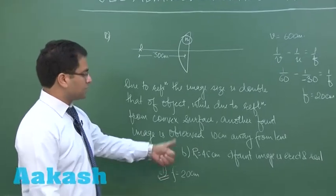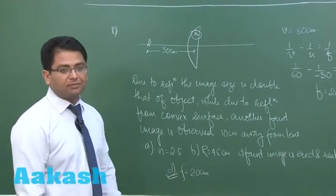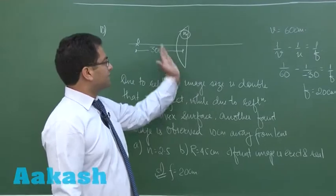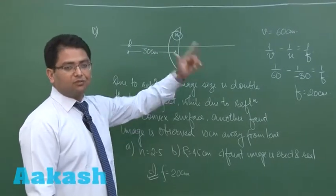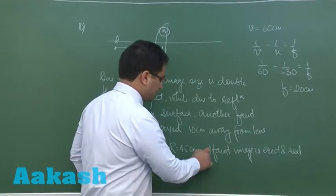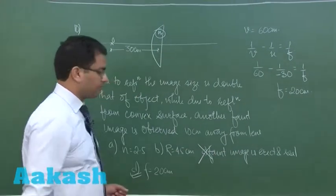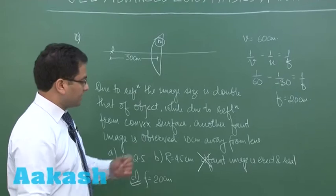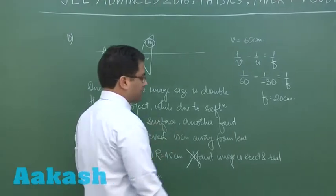Another faint image is observed 10 cm away from the lens. Now see it is a convex mirror so the image would be virtual. So in that situation the faint image is erect and real that would be incorrect. So let us try to calculate the radius from that particular data.